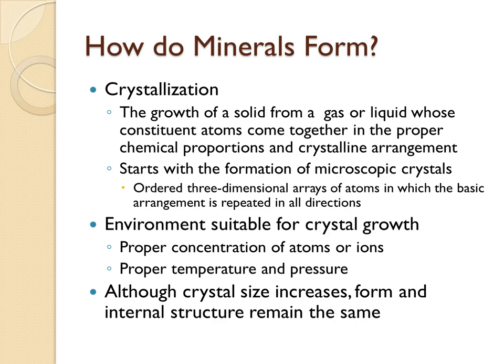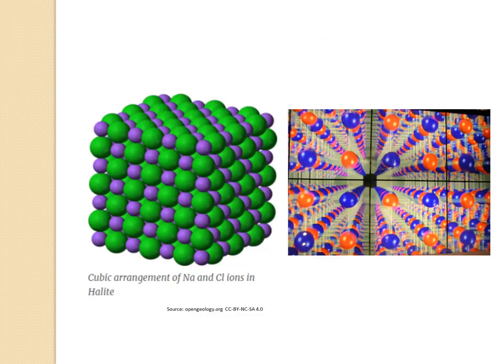The environment must be suitable for crystal growth to occur. The type of mineral you're going to have depends upon the concentration of atoms that are available, as well as the proper temperature and pressure. In this example we see the mineral halite, which is made up of sodium and chlorine atoms that come together to form a repeating cube-like structure.